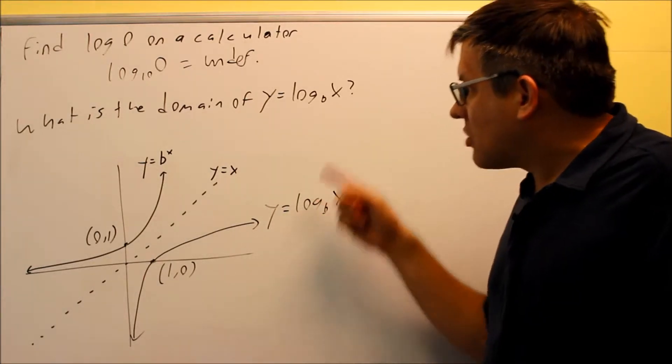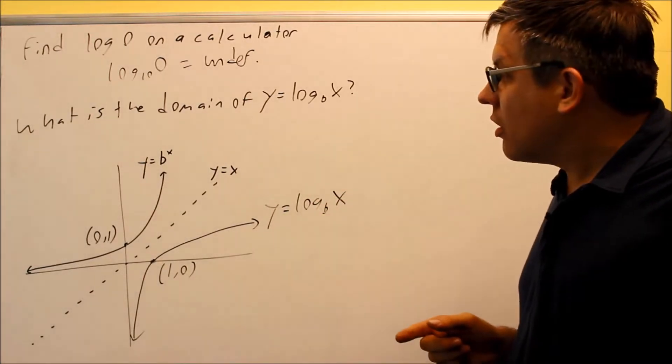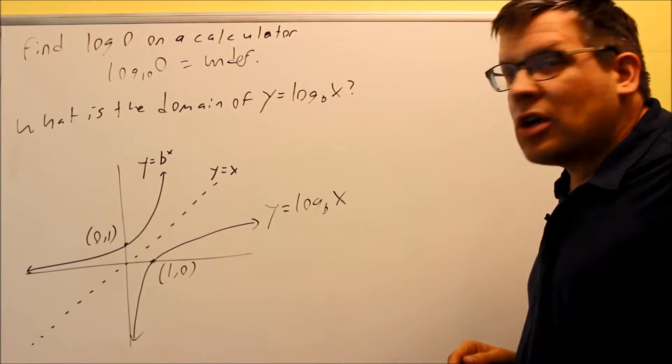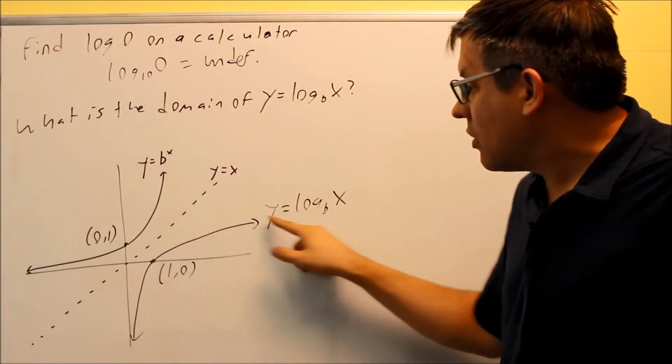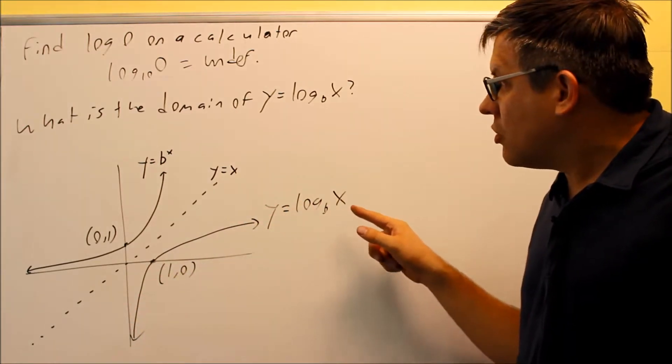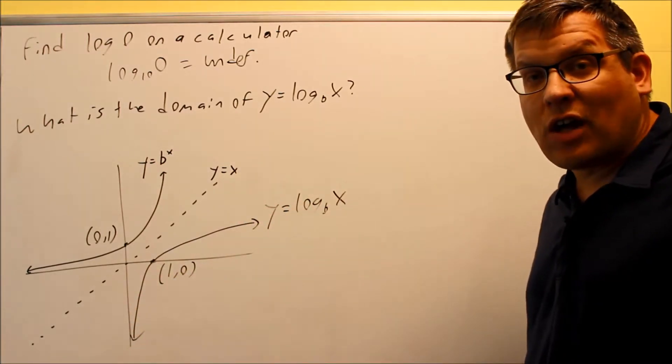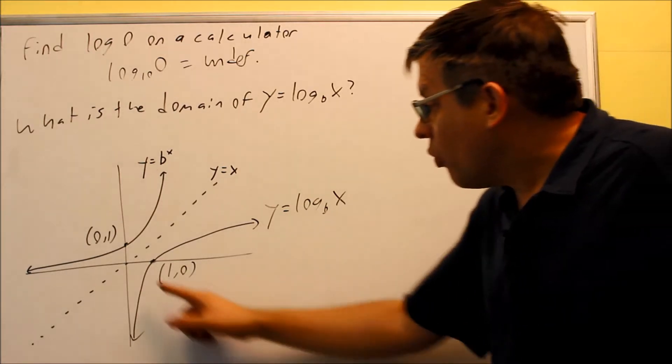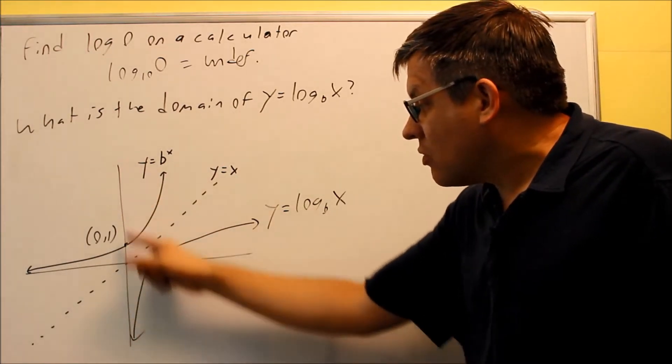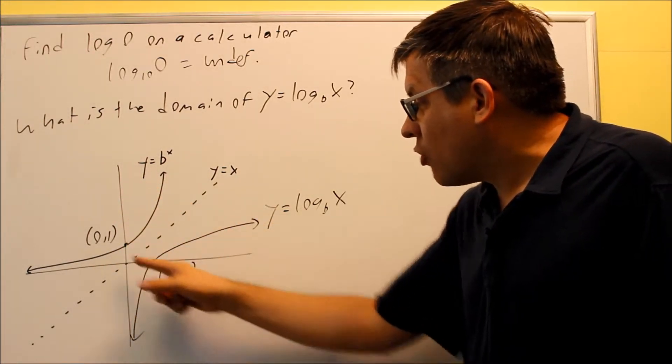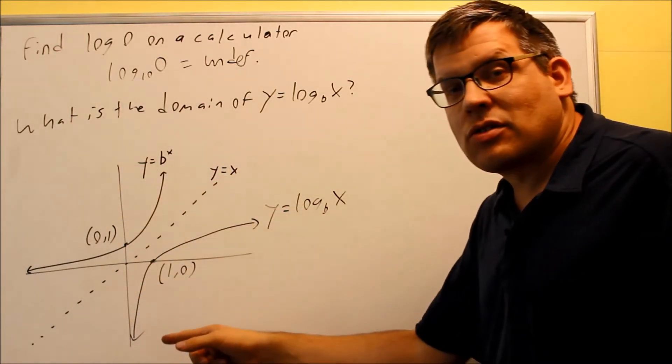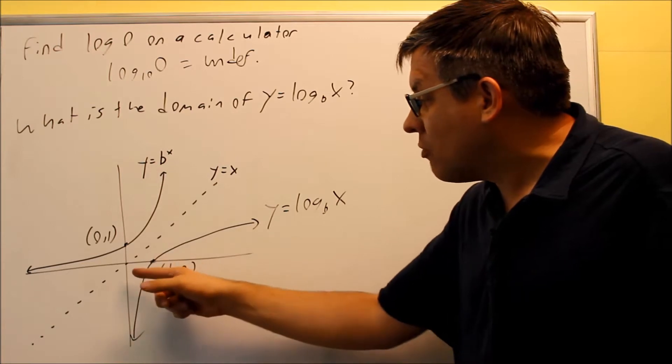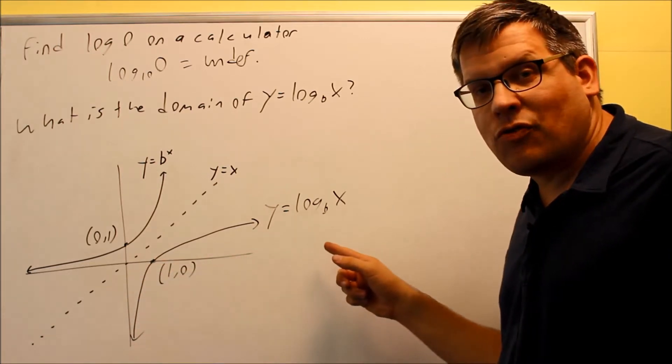Now that I have this, I can go back and answer this question here. What's the domain of log base b of x? We're going to look at the picture. We're looking at the log graph right here. We want to see what the domain is. Domain is talking about the x values that the graph is using. We notice that the x values, no part of this graph goes beyond the y-axis. That means that this is a vertical asymptote. That means that I'm starting from 0 and going all the way to infinity.